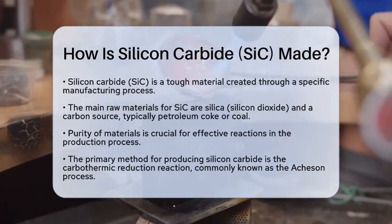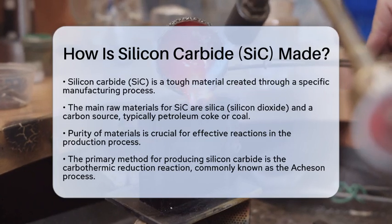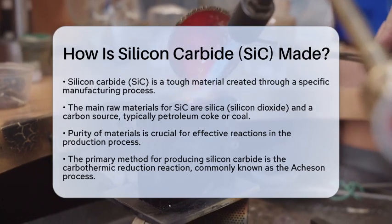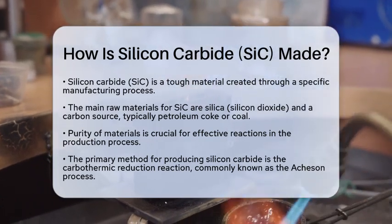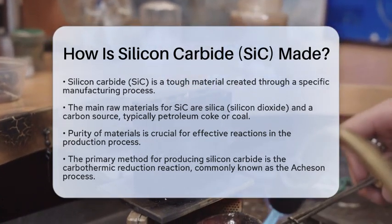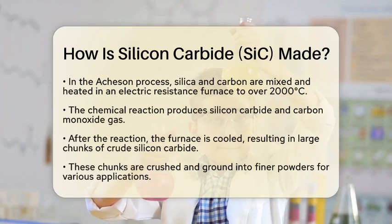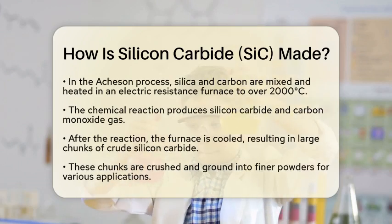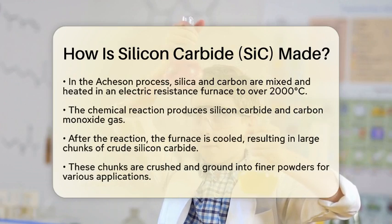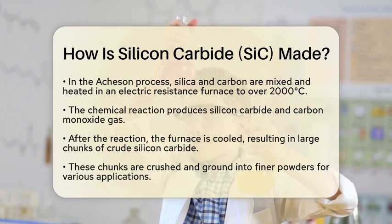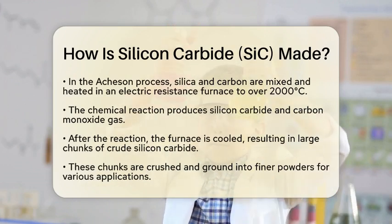Next, we move on to the carbothermic reduction reaction, which is the most common method used in industry. This process is known as the Acheson process. In this method, we mix silica and carbon and heat them to extremely high temperatures, usually above 2000 degrees Celsius, in an electric resistance furnace.